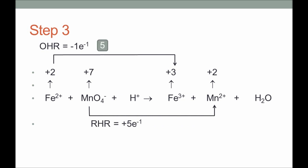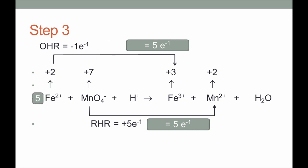Multiplying the oxidation half-reaction by five produces five electrons. The reduction half-reaction requires five electrons, so we have generated five moles of electrons by taking five moles of Fe²⁺. We add a coefficient of five for Fe²⁺ on the reactant side, and therefore five moles of Fe³⁺ on the product side.